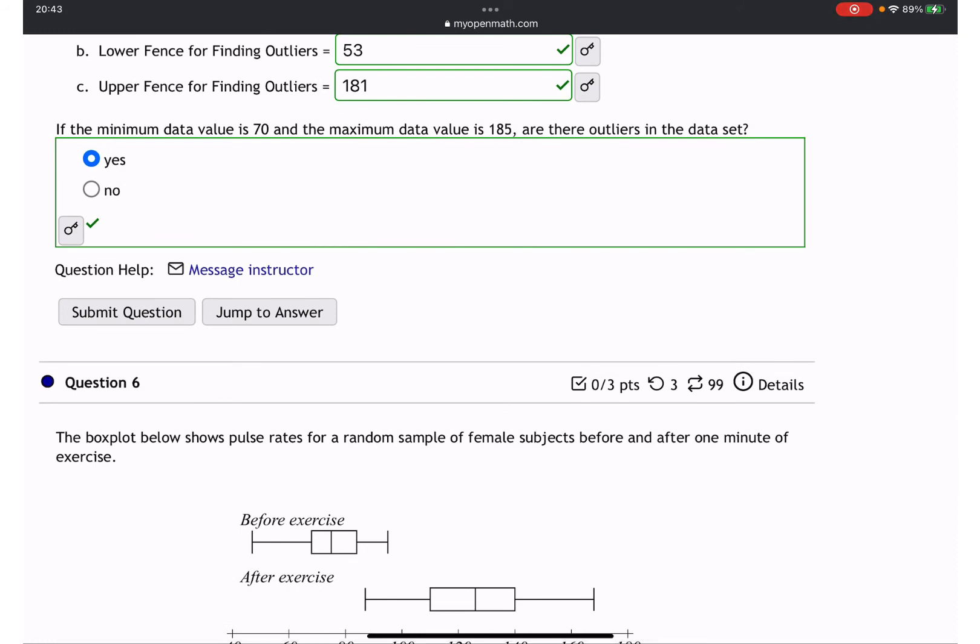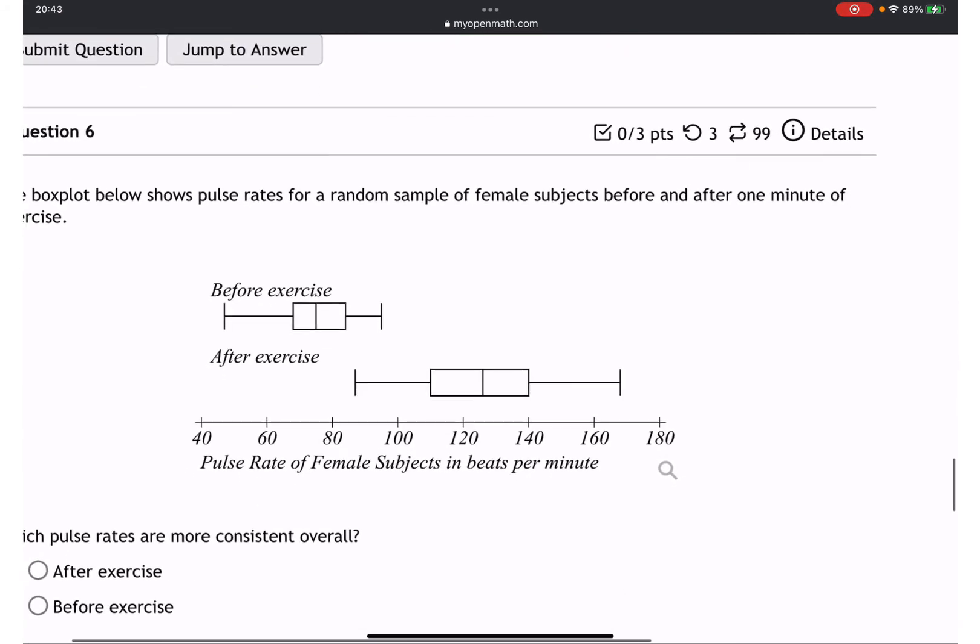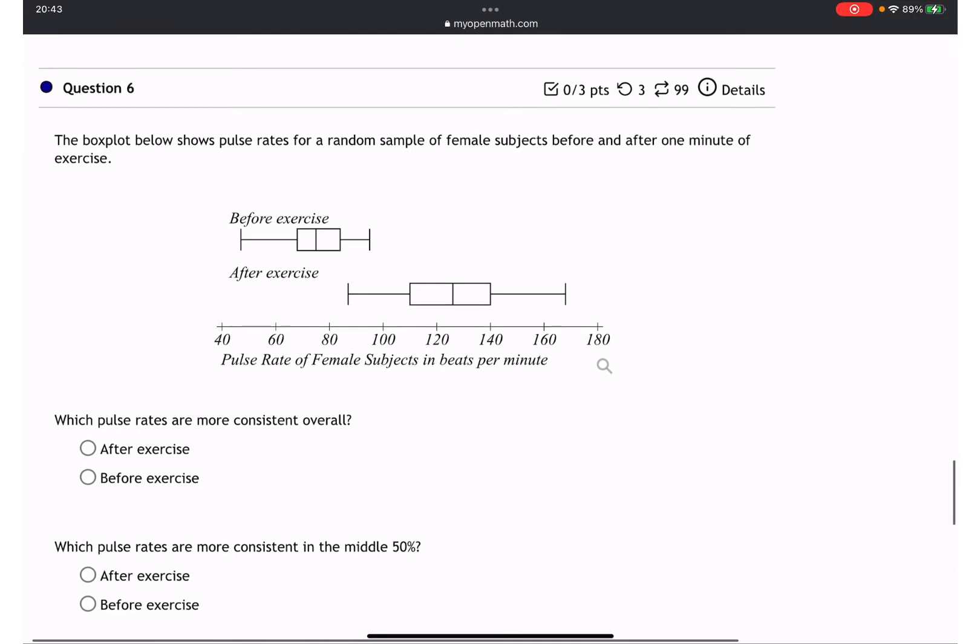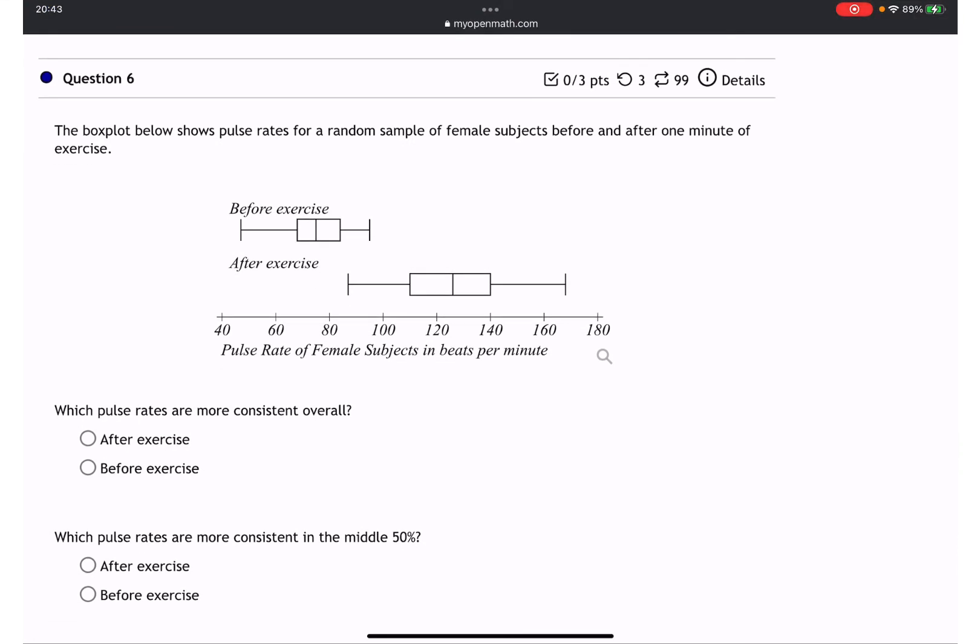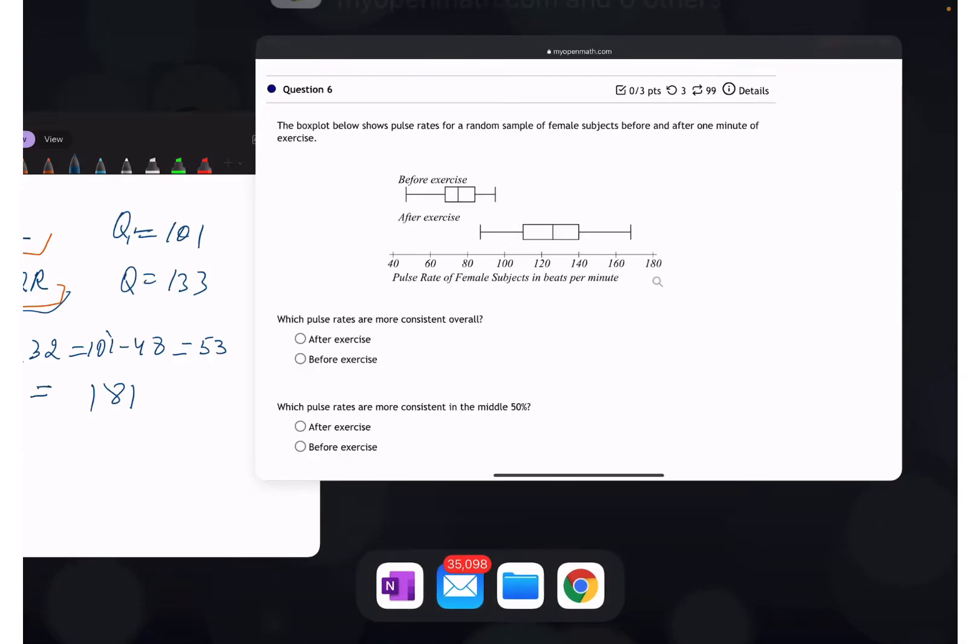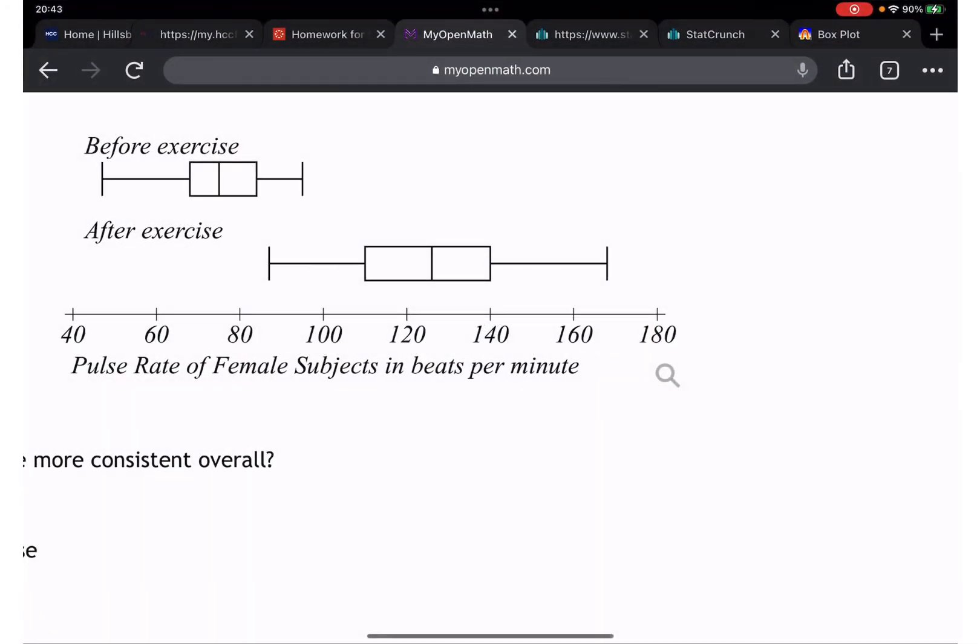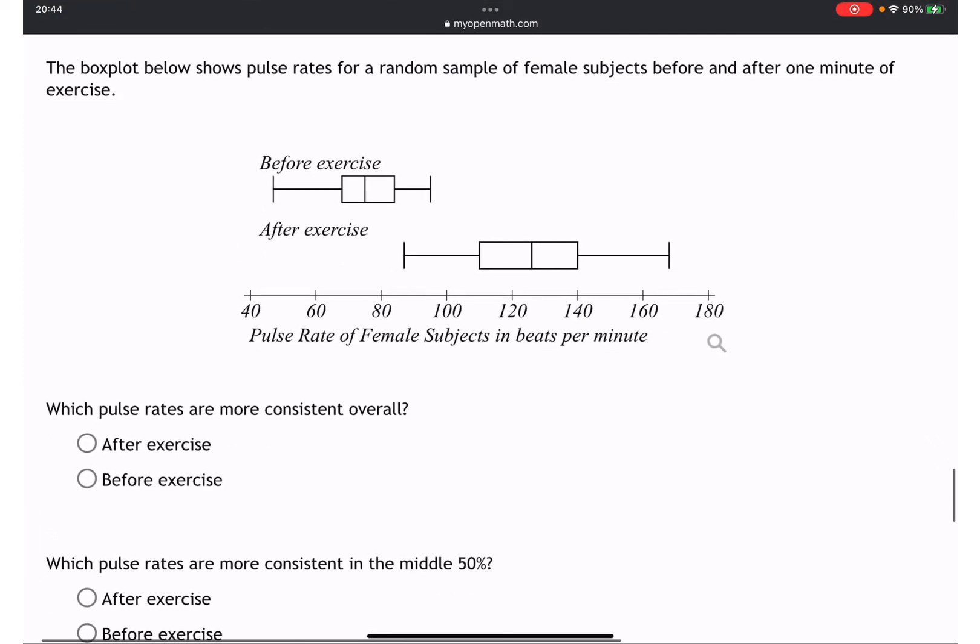The box below shows pulse rate of a random sample of female subjects before and after one minute of exercise. Which pulse rates are more consistent overall? Looking at box plot, what can we say? Obviously the one that is before, right? Because look at the after - it looks like more stretched.